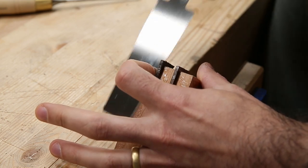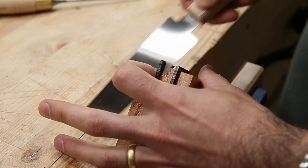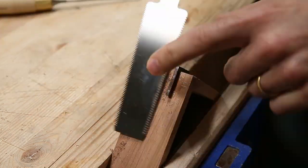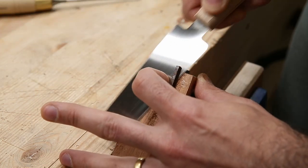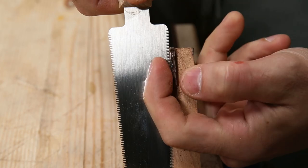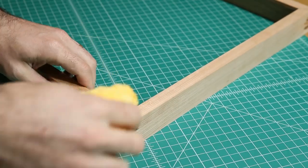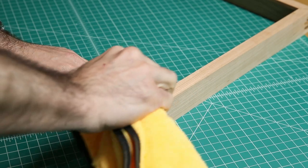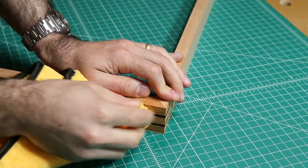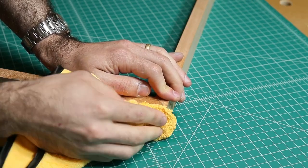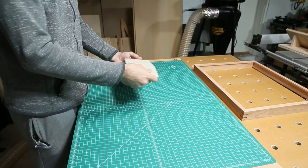So this flush cut pull saw has no set on the teeth. So you still can dig into the wood a little bit if you're not careful. But if you hold the blade up against the surface of whatever you're trying to cut flush against, it works pretty well. And you don't get any of the destruction of the surrounding material that you get with a saw that has a set.